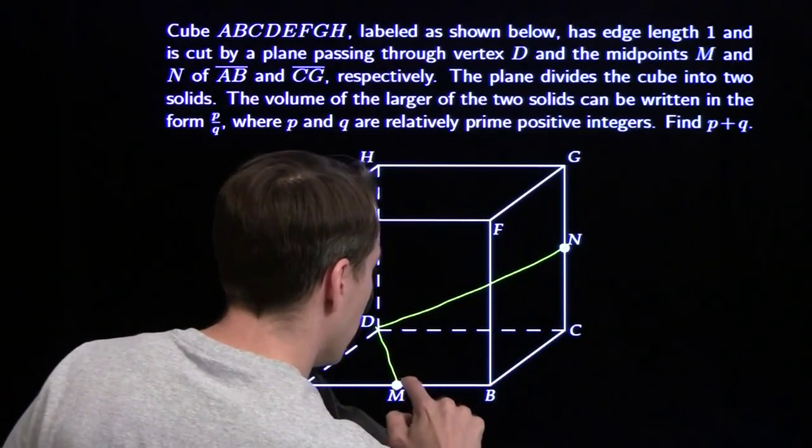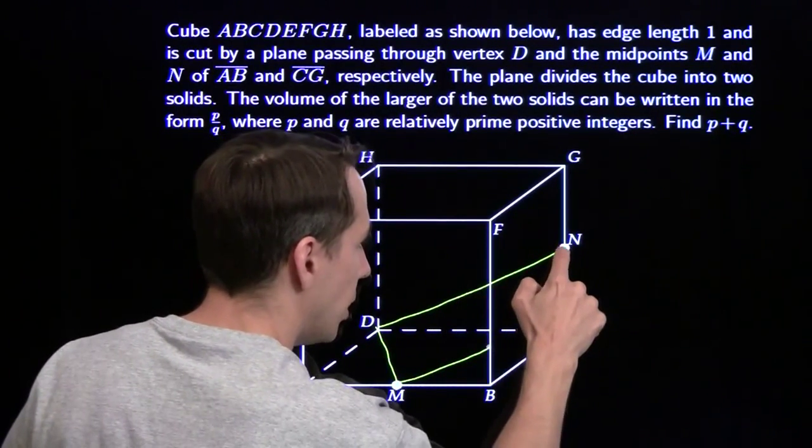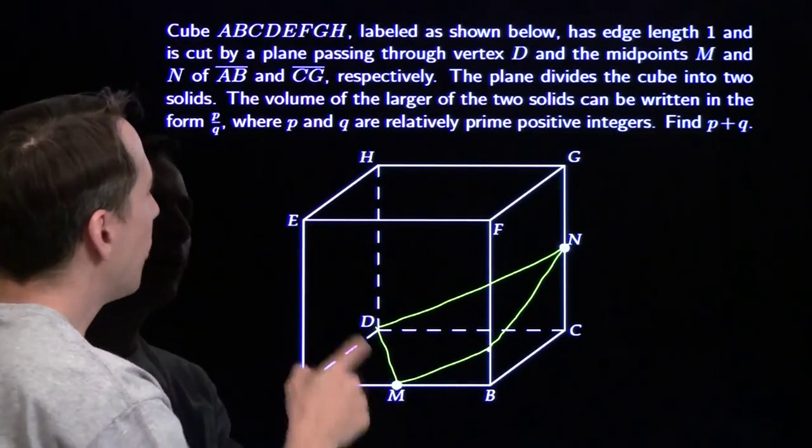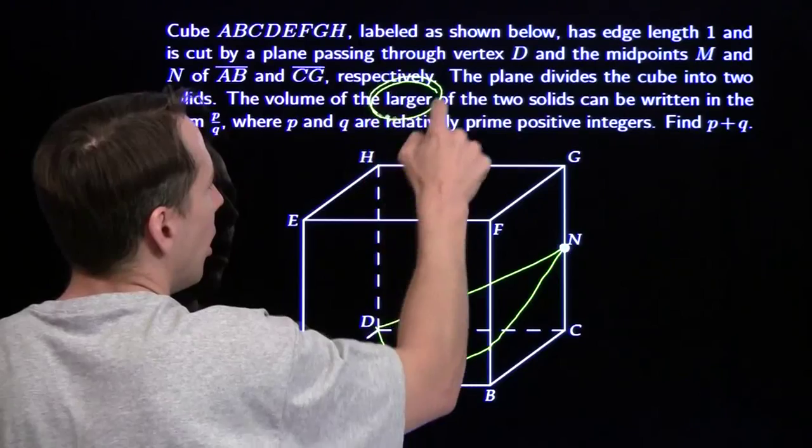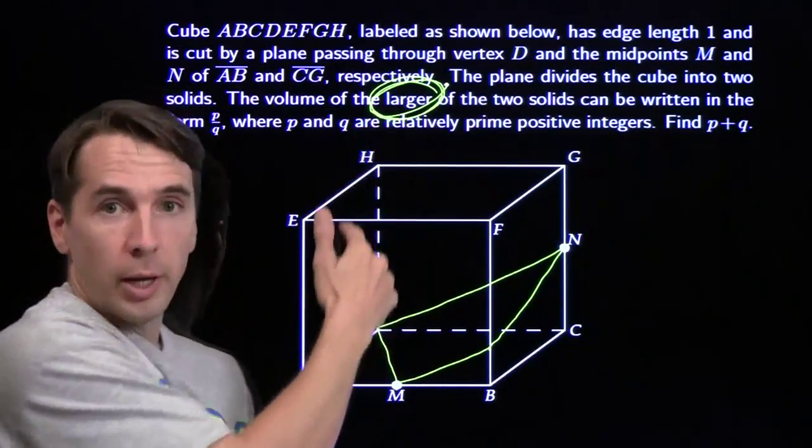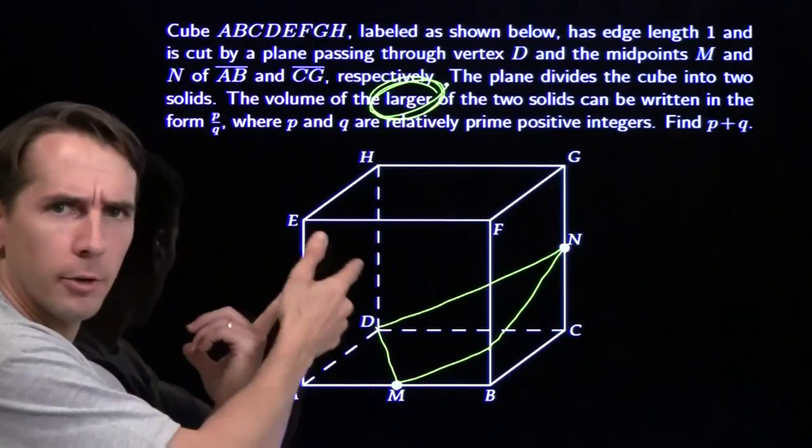I'm just going to hit some point up here on BF as well. So we've cut the cube into two pieces and we're looking for the volume of the larger piece. I'm going to circle that. And once you're on your test, you should circle that word too, so you make sure you go after the right piece.